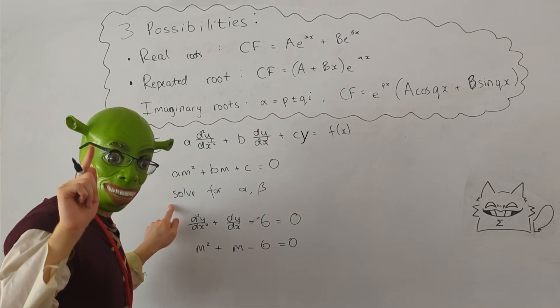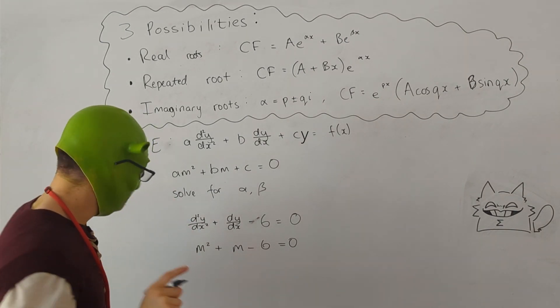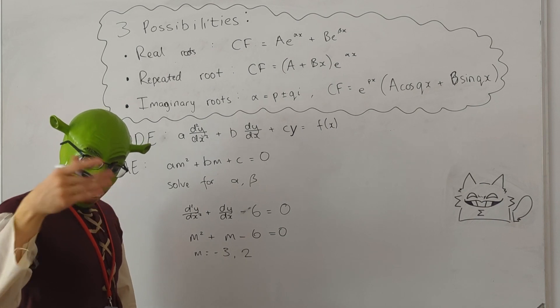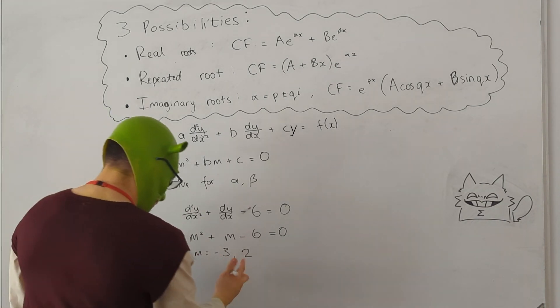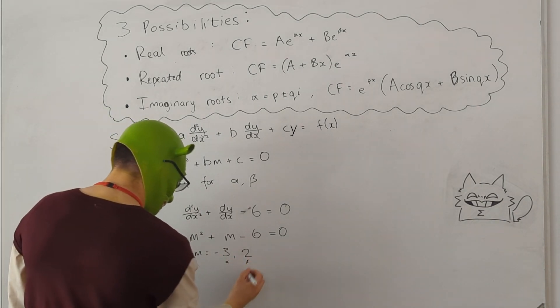And when we solve that, we're going to get our two roots, alpha and beta. You should get M equals minus 3 and 2, so this is our alpha, and this is our beta.